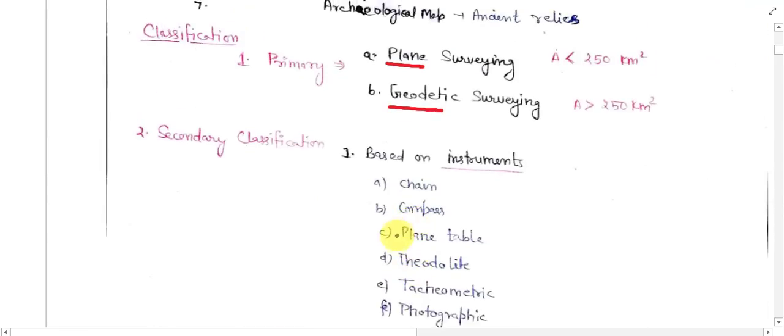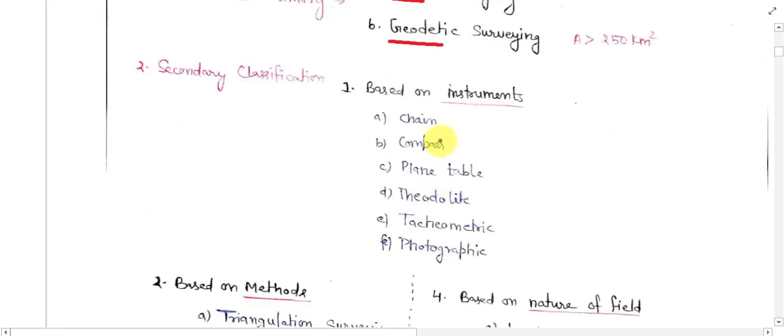The first one is based on instrument: chain surveying, compass surveying, plane table surveying, satellite surveying, tachometric surveying, photographic surveying. All these types of surveying we will go with details when we cover this in respective units.